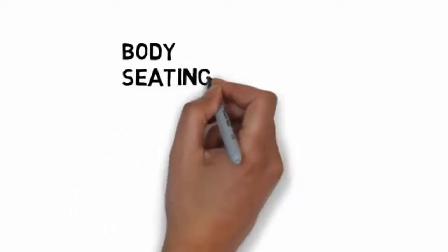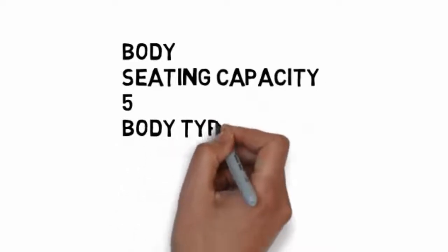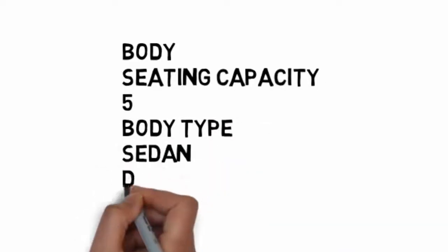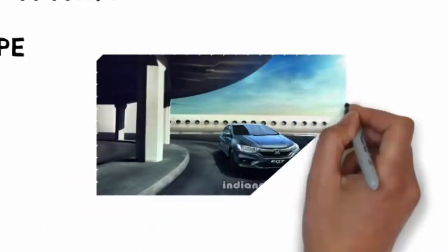The body type of this car is a sedan with a seating capacity of 5 people and the number of doors are 4. This is how the Honda City looks like.